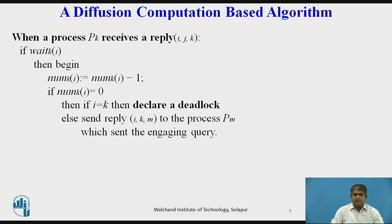However, several diffusion computations may be initiated for a process. At any time, only one diffusion computation is current for any process; all others are outdated. The current diffusion computation can be distinguished from outdated ones by using sequence numbers.